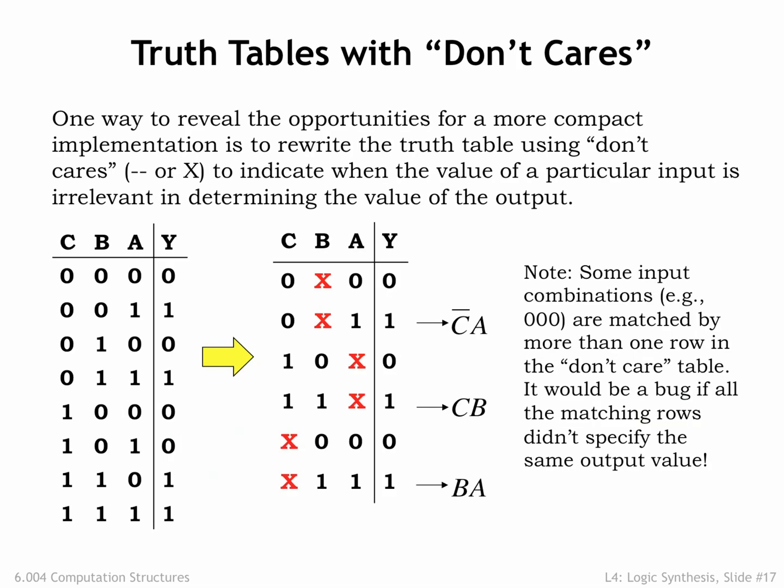Another way to think about simplification is by searching the truth table for don't-care situations. For example, look at the first and third rows of the original truth table on the left. In both cases A is 0, C is 0, and the output Y is 0. The only difference is the value of B, which we can tell is irrelevant when both A and C are 0.